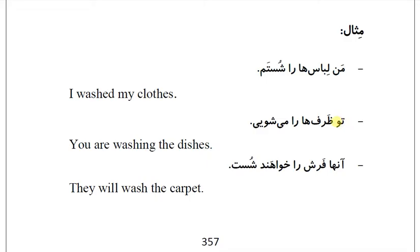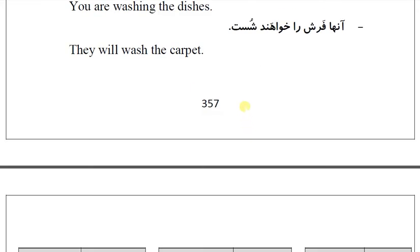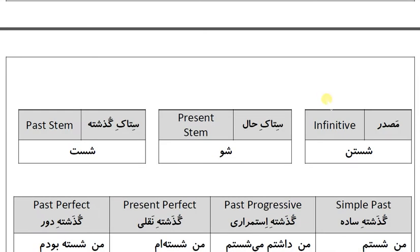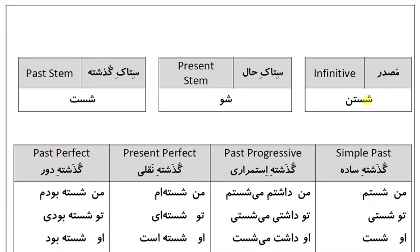تو ظرف‌ها را می‌شویی (You wash the dishes). آن‌ها فرش را خواهند شست (They will wash the carpet). Now for the full conjugation — infinitive: شستن (shostan). ستاک حال (present stem): شو. ستاک گذشته (past stem): شست.